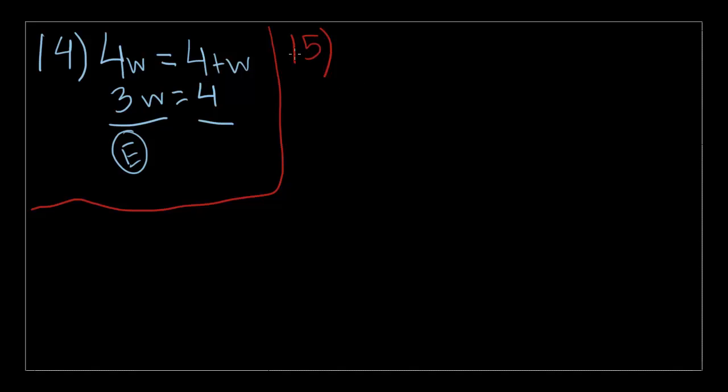So number 15. The lengths of the sides of a right triangle are consecutive even integers, and the length of the shortest side is X. Which of the following equations could be used to find X? All right, so the smallest side is X, and they say that each side, the lengths of the sides are consecutive even integers. Since X is the smallest, then the next even integer is X plus 2, because we already know that X is an even number because it says consecutive even numbers. The next number after that would be X plus 2 plus 2, or X plus 4.